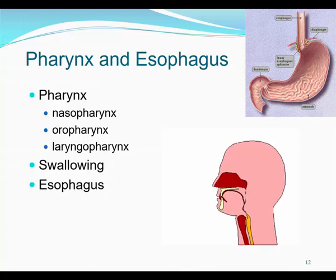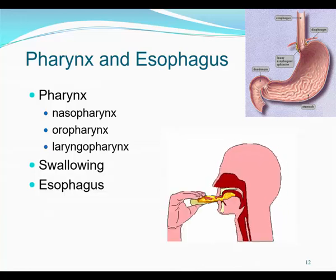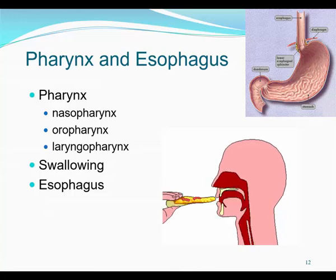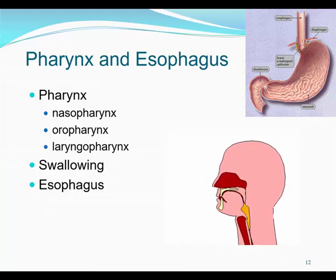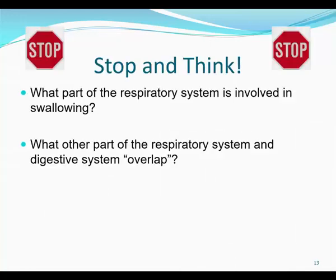The esophagus, which is about 10 inches long, goes from the pharynx to the stomach. Its function is to carry food. It only secretes mucus, so not much digestion is going on beyond what the salivary amylase might still be doing. The mucus moistens the food and lubricates the tube. The esophagus ends at the stomach when the food goes through the cardiac sphincter. The part of the respiratory system involved in swallowing is the epiglottis, and the overlap is the oropharynx.